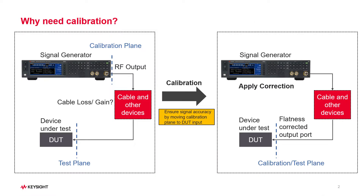You are probably all too familiar with issues caused by long connections. The longer the cable, the higher the loss. When you add components between the signal generator and the DUT, the calibration plane and the test plane are not the same plane. You must correct the difference between the two planes. The flatness correction can compensate the transmission loss and help achieve robust flatness performance as the input to your DUT.